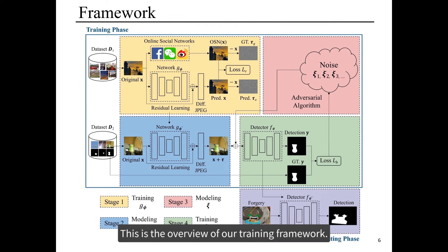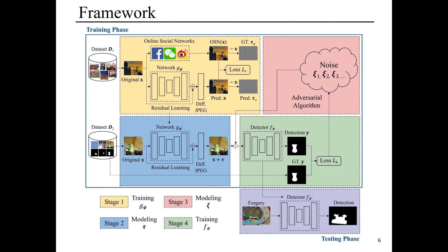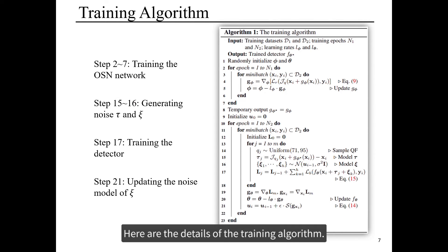This is the overview of our training framework. Stage 1 and 2 aim to model the predictable tau noise, while stage 3 models the unseen noise through the adversarial algorithm. Here are the details of the training algorithm.